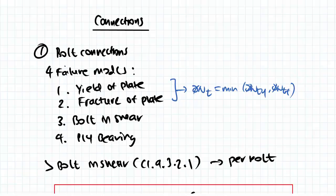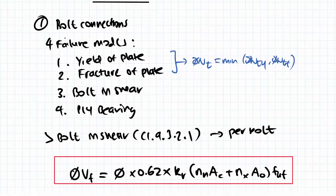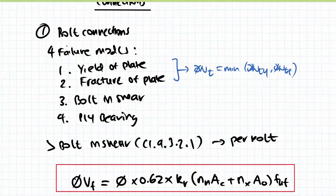So starting with bolt connections, remember that there are four failure modes in bolt connections. We're going to be looking at the yielding and fracturing of the plate, and this is something we've done before in the tension chapter. Third, we're going to look at bolt shear, and fourth, we're going to look at ply bearing. So these two are actually quite new. These are the new ones in this topic.